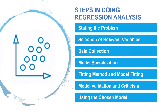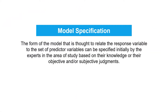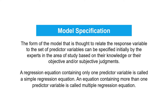The fourth step is model specification. The form of the model that is thought to relate the response variable to the set of predictor variables can be specified initially by the experts in the area of study based on their knowledge or their objective or subjective judgments. The hypothesized model can then be either confirmed or refuted by the analysis of the collected data. Note that the model needs to be specified only in form, but it can still depend on unknown parameters. A regression equation containing only one predictor variable is called a simple regression equation, and an equation containing more than one predictor variable is called a multiple regression equation.